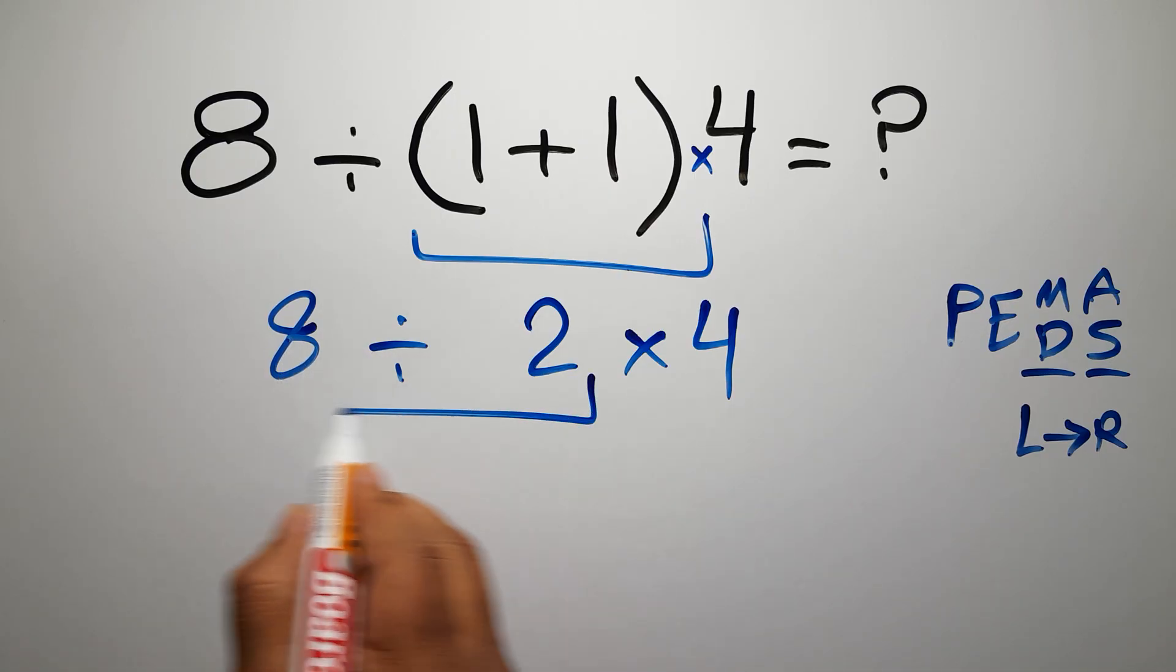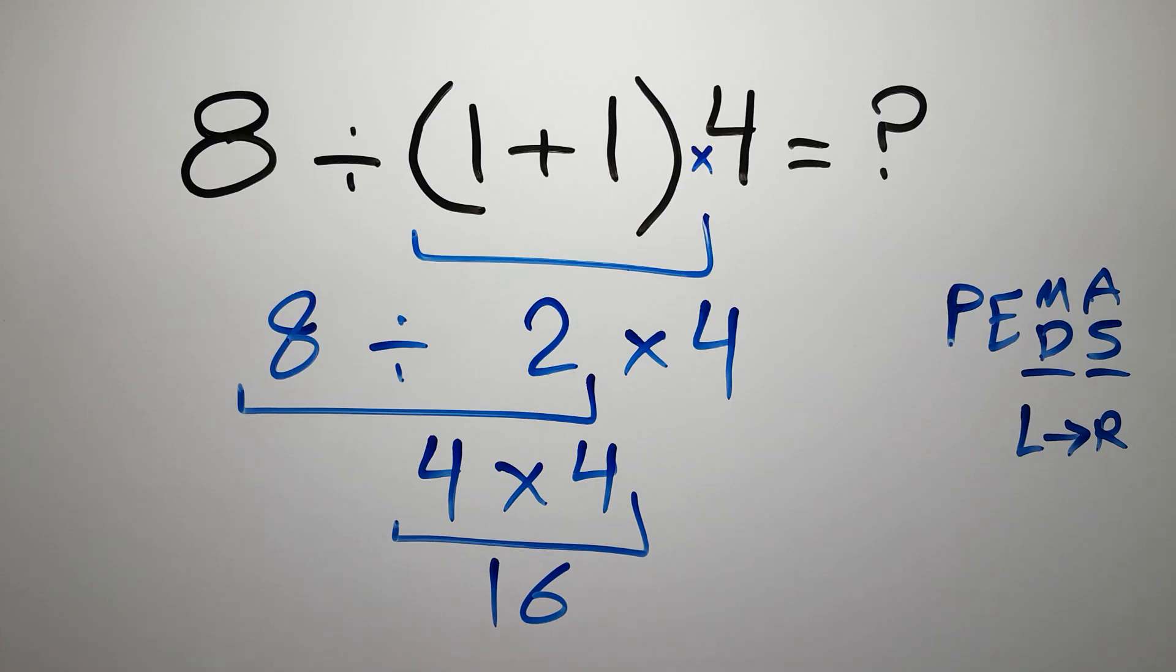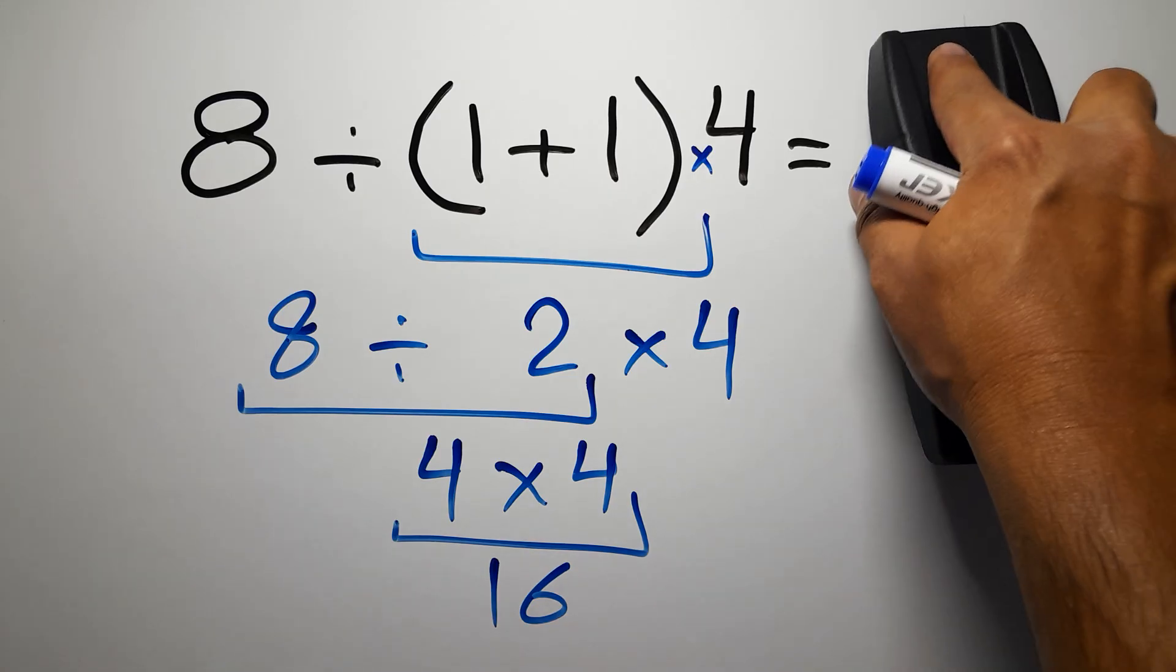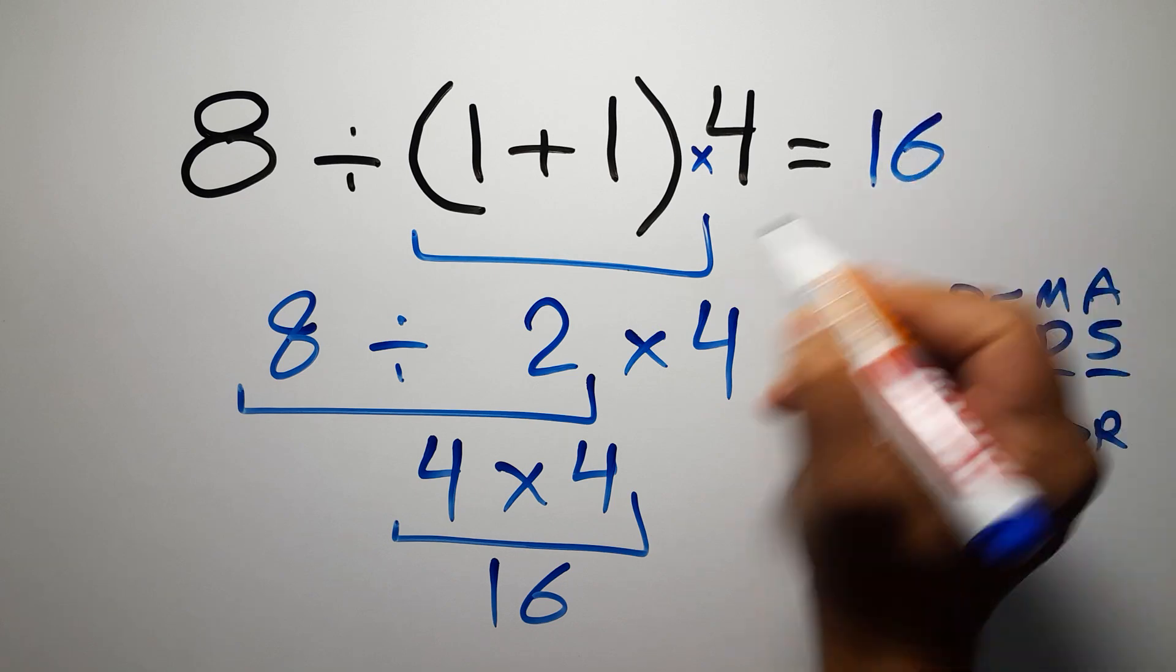And 4 times 4 is just 16. This is our final answer to this problem. The correct answer is 16.